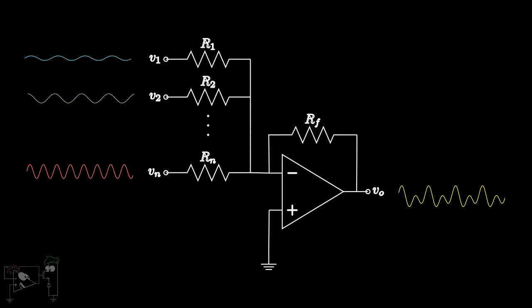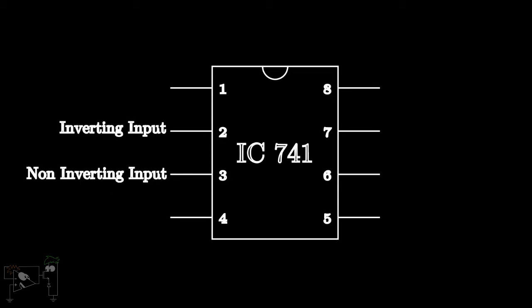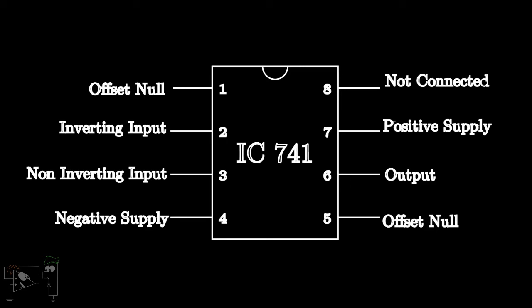One of the most commonly used op-amps is the IC741, originally manufactured by Fairchild Semiconductors. It has an 8-pin dual-in-line package. Pins 2 and 3 are the inverting and non-inverting inputs respectively, while pin 6 is the output voltage. Pins 4 and 7 are used for the negative and positive supply voltages respectively. Pins 1 and 5 are used for nulling any offset voltages. Pin 8 is not used and should remain unconnected.